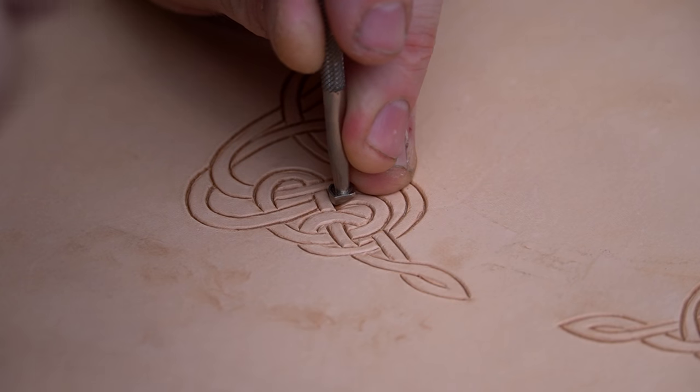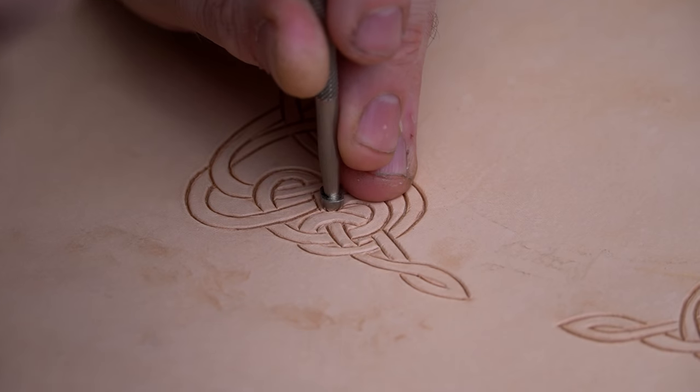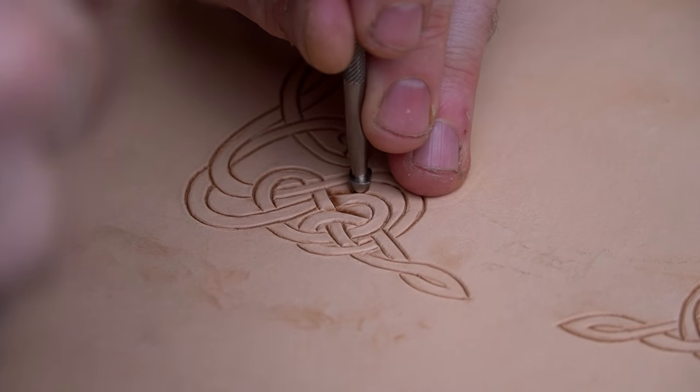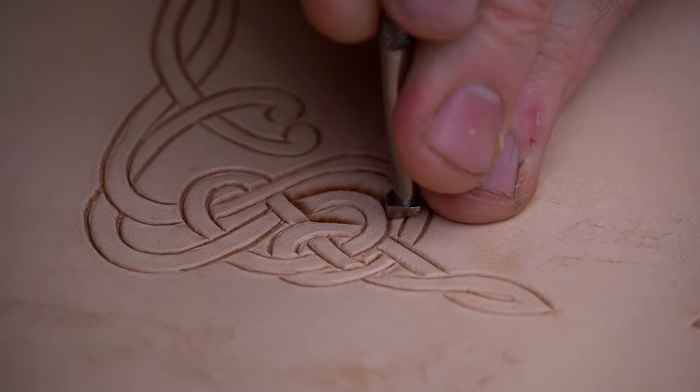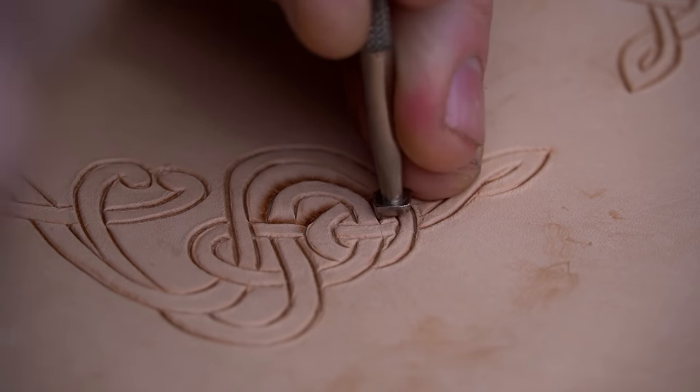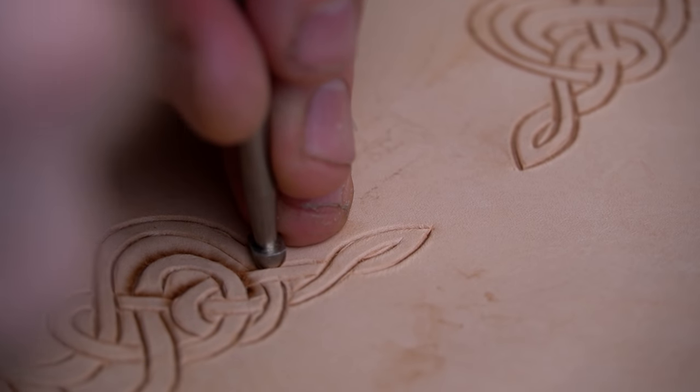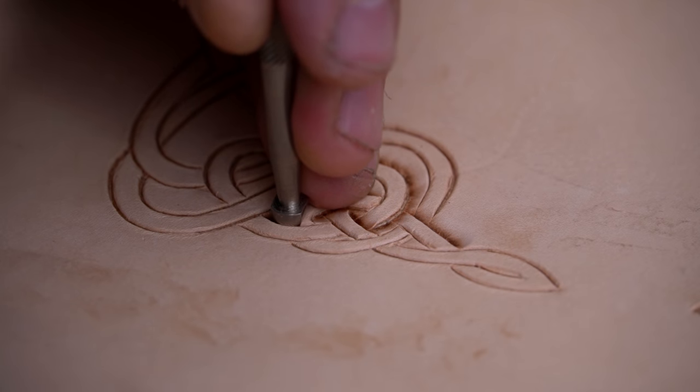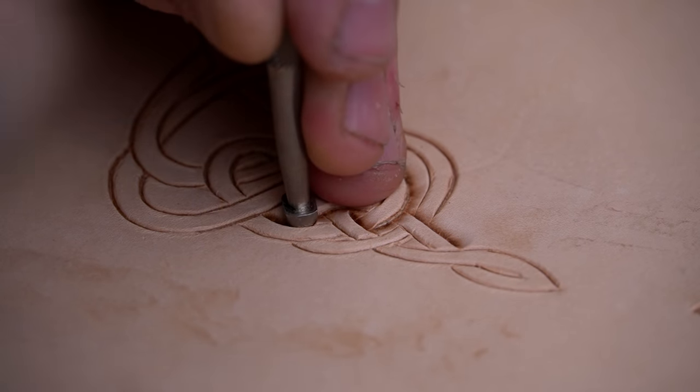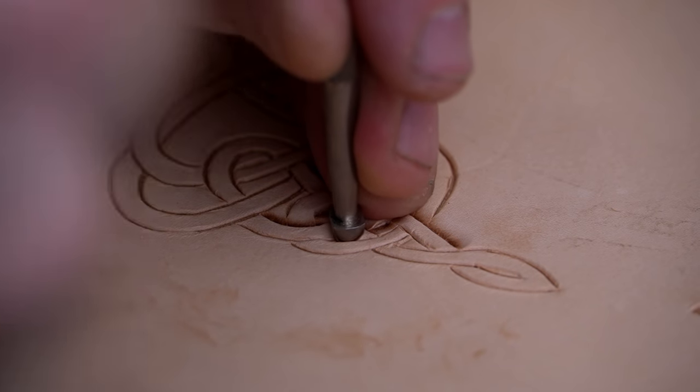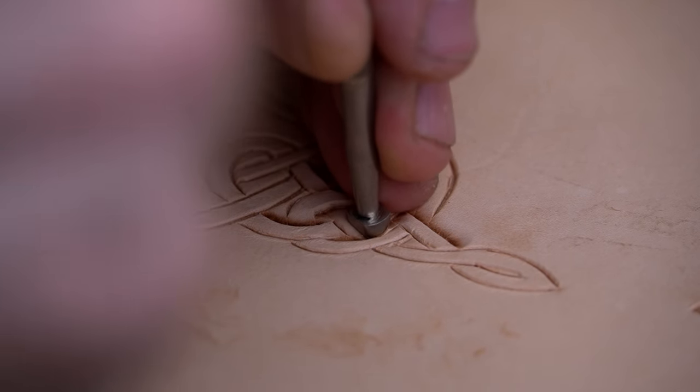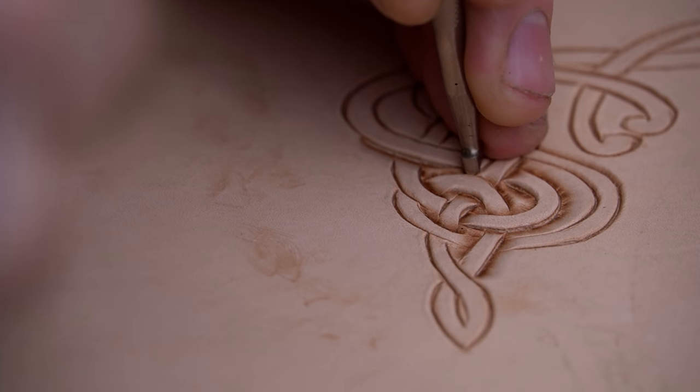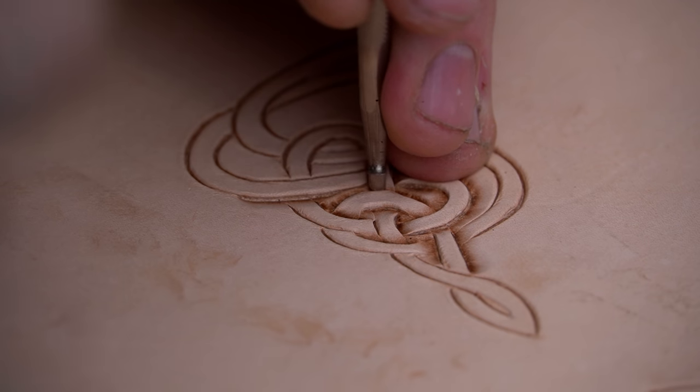Also, the leather you need to do leather carving properly is vegetable tanned leather so make sure you have that. So we're beveling around all the edges of every single line. It's a lot of work, but it'll really help the piece pop. We're specifically making sure we even do the little over-under bits to make it look like the knotwork is diving under and over the other parts of itself.